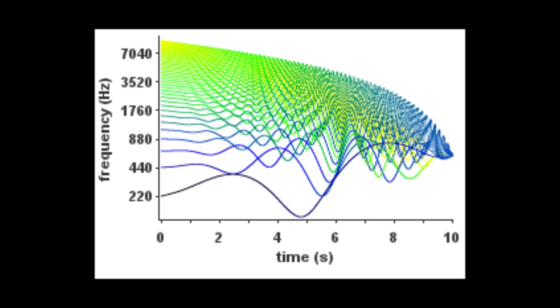So, on the other end of the synth spectrum, we have additive synthesis. With additive synthesis, instead of removing frequencies from a pure tone, we add tones at different frequencies to create a much more complicated sound.